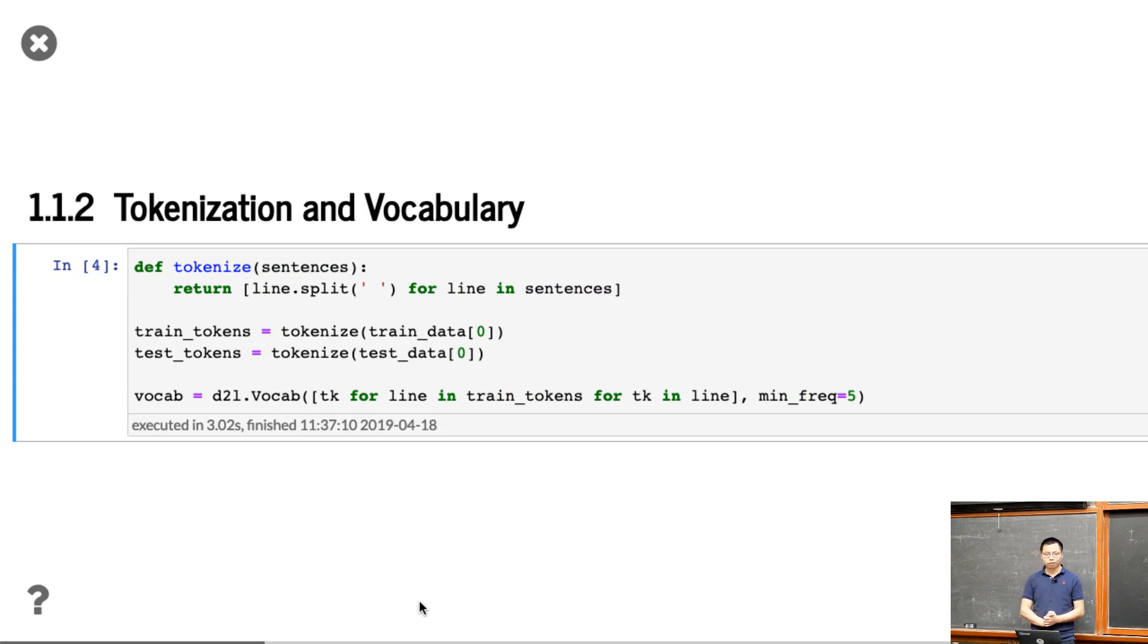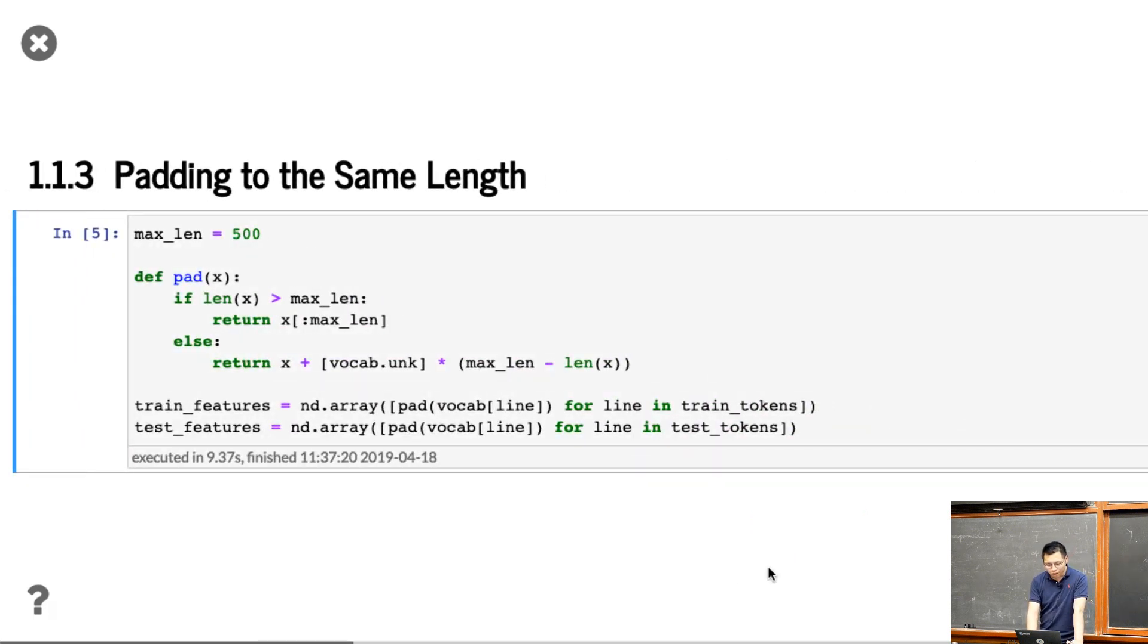We need to tokenize it, which means given text, we want to make it into elements. A token here is a word. We build the vocabulary, which contains the unique words we'll keep. For low frequency words, we skip them. Here, we split by space to get tokens, then get the vocabulary with minimum frequency 5. If a word appears less than 5 times, we skip it in this vocabulary.